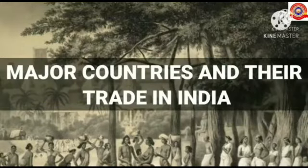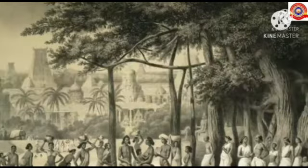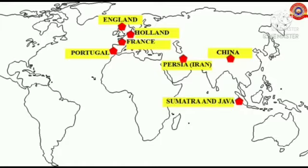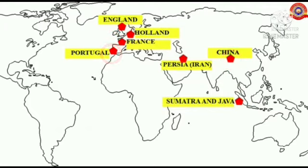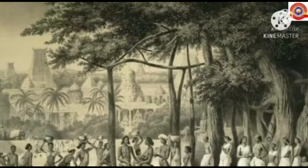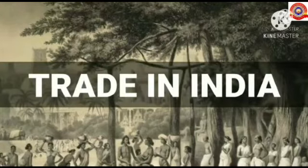Next, let's see the major countries that had trade relations with India during the medieval period. These are: first, Sumatra and Java; second, Persia in present Iran; third, Holland; fourth, England; fifth, China; sixth, Portugal; and seventh, France.